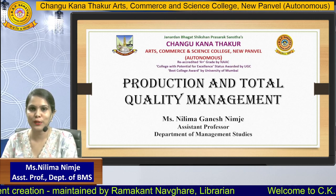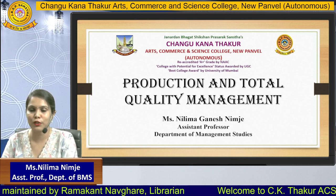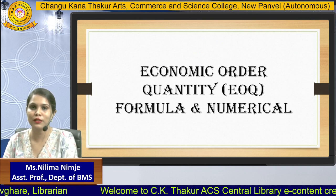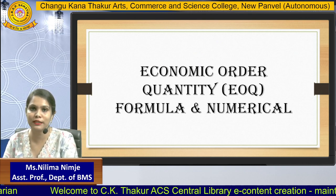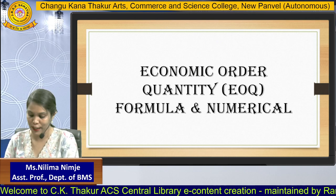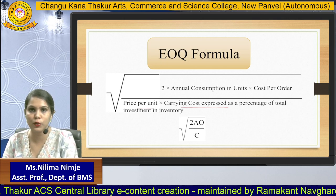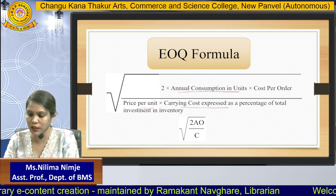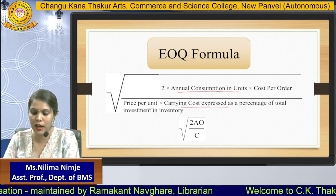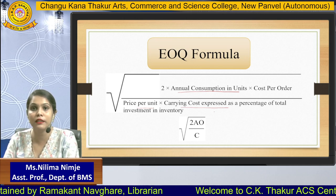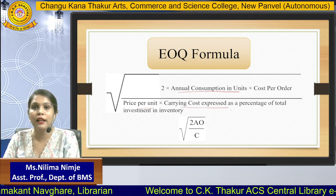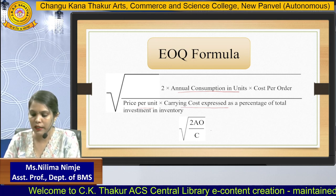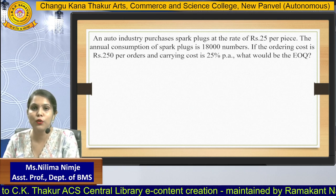Hello everyone, this is Niliman from the BMS department. Today I'm going to cover Production and Total Quality Management. This is an extension of the previous video. The topic is Economic Order Quantity (EOQ) formulas and numericals. The EOQ formula is: square root of (2 × annual consumption in units × cost per order) divided by (price per unit × carrying cost percentage). In shorthand: √(2AO/C).